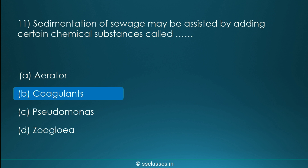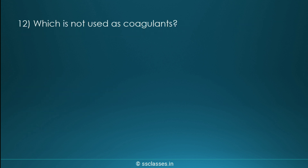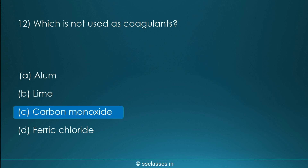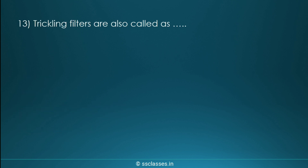Question thirteen: which is NOT used as a coagulant? Options are alum, lime, carbon monoxide, or ferric chloride. The correct option is carbon monoxide — it is a pollutant and cannot be used as a coagulant. Alum, lime, and ferric chloride are all used as coagulants. Always remember this — a question may be asked about which substances are coagulants.